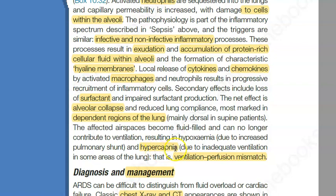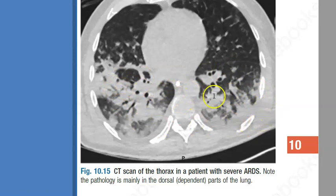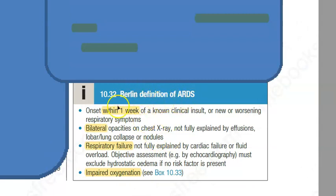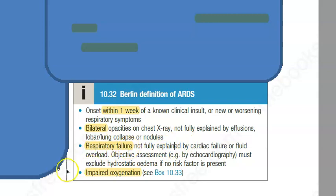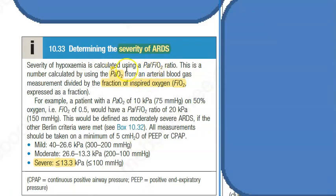This alveolar collapse occurs especially in the dependent areas of the lung, producing white opacities on CT. There will be hypoxemia and hypercapnia — a ventilation-perfusion mismatch — where the inspired air has enough oxygen, but the arterial blood gas still shows insufficient oxygen. Regarding the Berlin definition: within one week, respiratory failure with impaired oxygenation, bilateral opacities — ruling out effusions, lung collapse, and nodules as causes.